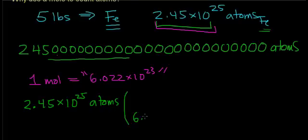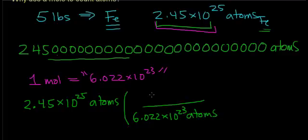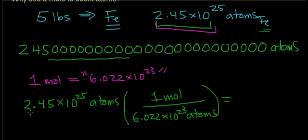And I know that there are 6.022 times 10 to the 23rd atoms in 1 mole of atoms. And so what I'm going to do is divide this number by this number. And notice one other thing. This unit of atoms cancels out with this unit of atoms.